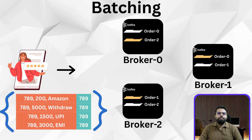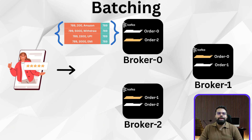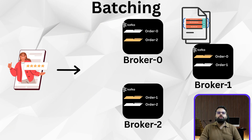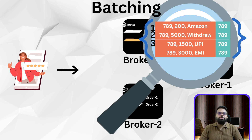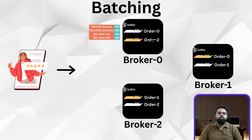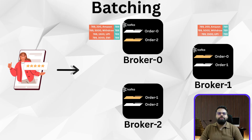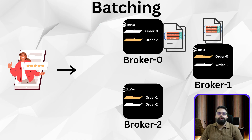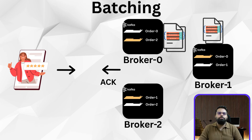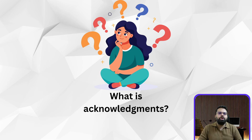Behind the scenes, Kafka batches messages before sending them, either based on size or a timeout. Once ready, the batch is sent to the partition leader. The broker appends it to the segment file — an append-only log — and assigns each message a unique offset, kind of like a line number in a notebook. Offsets are bookmarks; they let consumers pick up exactly where they left off. If replication is enabled, the leader also forwards the messages to follower brokers, who write them to their own logs. Once a follower confirms the write, Kafka can send the acknowledgement back to the producer.